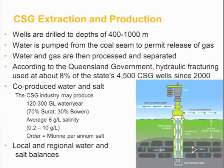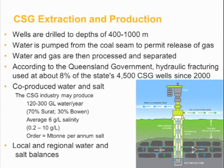In terms of the mechanisms for releasing and extracting coal seam gas, we're talking about drilling boreholes on average about 400 to 1,000 metres deep. The wells are pumped to depressurise the coal bed in order to remove both gas and water — the depressurisation process is absolutely critical. One important point about CSG distinct from shale gas is that, based on Queensland Government data, about 8% of Queensland's 4,500 CSG wells have actually been hydraulically fractured — a vast minority of cases.